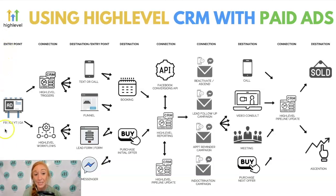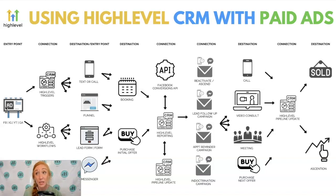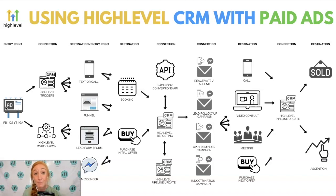If we start on the left-hand side, you'll see it says Entry Point. This is typically going to start with an ad, but it could start with any other form of outreach — a networking referral, an organic blog, or your podcast. But ultimately, we're looking at this through Facebook, Instagram, YouTube, or Google Ads. It also could come from organic traffic again, but we primarily are using the system to maximize the value of our paid advertising.